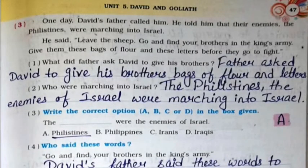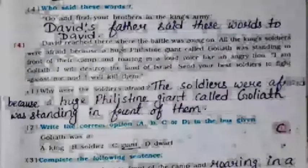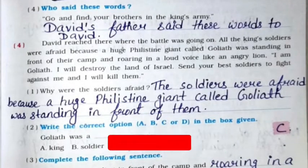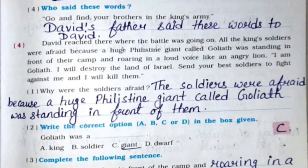Question answer: What did father ask David to give his brothers? Father asked David to give his brothers bags of flour and letters. Second: Who were marching into Israel? The Philistines, the enemies of Israel, were marching into Israel. MCQ: The Philistines were the enemies of Israel — it's option number A. Next: Who said these words, 'Go and find your brothers in the king's army'? David's father said these words to David.